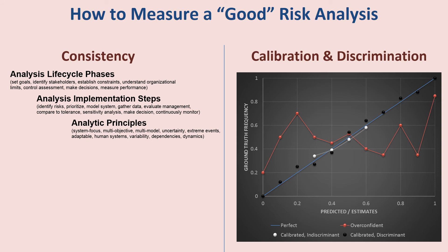The individual represented by the black dots is both calibrated and discriminative. They're able to produce many more predictions of zero — certainty that the event won't happen — or one, certainty that it will happen. And the collection of their predictions is still consistent with the actual outcomes. This calibration and discrimination has many opportunities, and there are processes we can explore in another video.